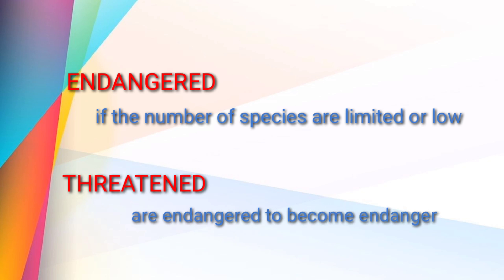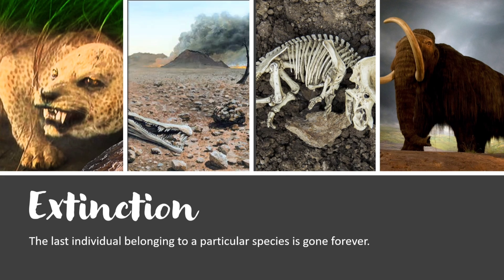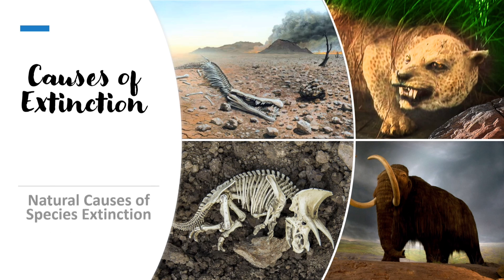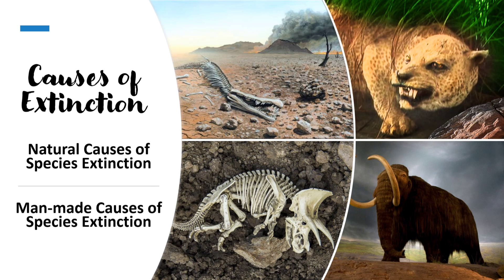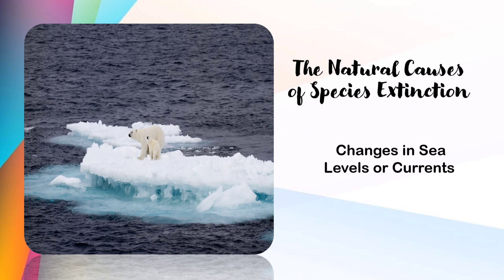There are two types of extinction: natural causes and man-made causes. Let's talk first about the natural causes of extinction. One of these is extreme heating and cooling of the Earth — there are species not capable of adapting to rapid changes in climate and temperature, making it difficult for survivors to find food, which causes a decreasing population. Next is changes in sea level or currents caused by the melting of ice. Seafloor spreading causes large displacement of water occupying land that is already occupied. Additionally, gases from volcanic activity mix into water, changing its chemical composition and making it uninhabitable to other species.